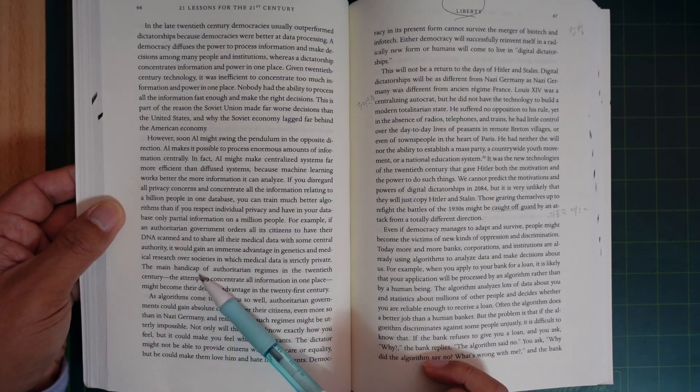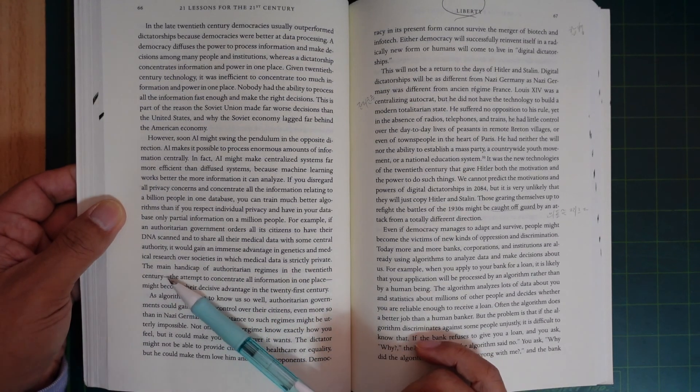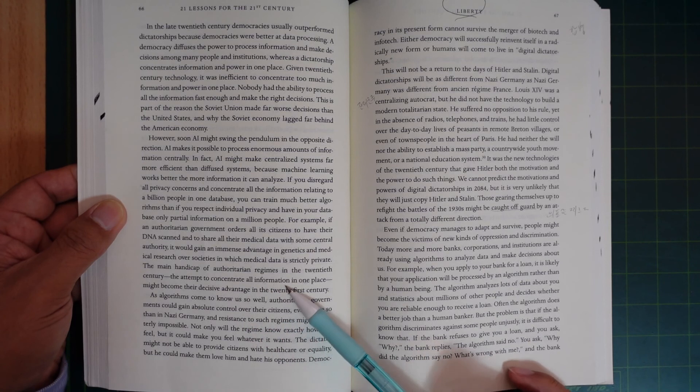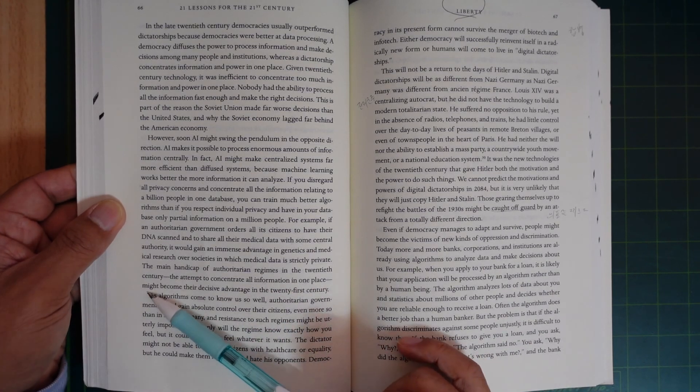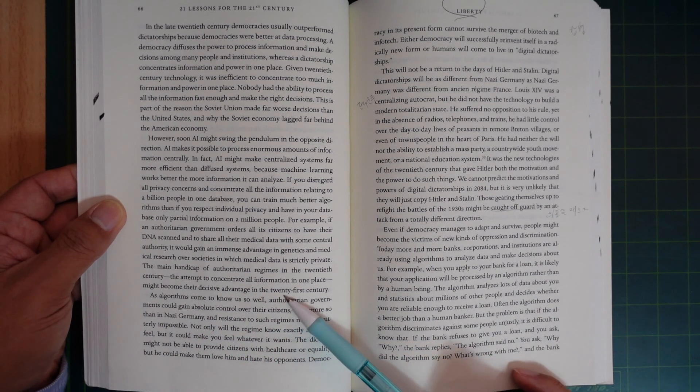The main handicap of authoritarian regimes in the 20th century, the attempt to concentrate all information in one place, might become their decisive advantage in the 21st century.